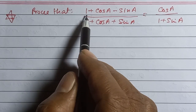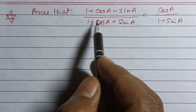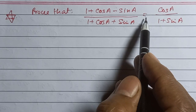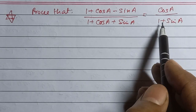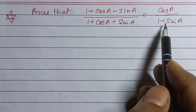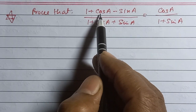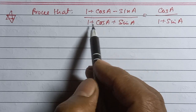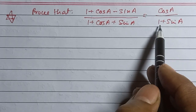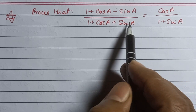Prove that (1 + cosA - sinA) / (1 + cosA + sinA) equals cosA / (1 + sinA). This is a Class 10 trigonometry identity proof.